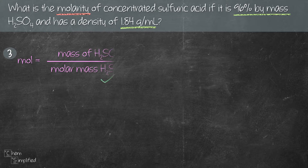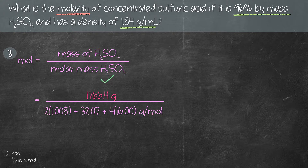Using the mass of H₂SO₄ we just found, let's plug it into the mole formula. We have 1766.4 grams for the mass of H₂SO₄. For the molar mass of H₂SO₄, we use atomic masses from the periodic table for H, S, and O — don't forget to multiply 2 for H and 4 for O. Dividing the mass by the molar mass gives us 18.01 moles.